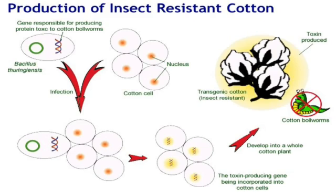Now, this one cell is multiplied into the entire plant by using tissue culture technique. As a result of tissue culture technique, the cotton plant with resistance against the insect is produced.